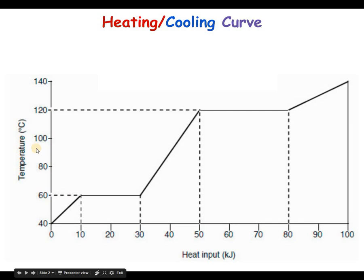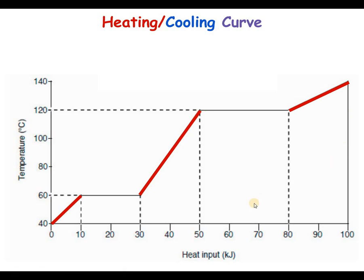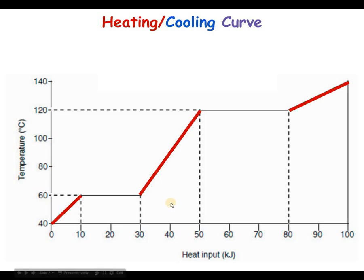On this heating and cooling curve graph, the y-axis represents temperature in degrees Celsius and the x-axis represents the amount of heat energy put into a substance. As we increase the amount of energy, we also see an increase in temperature. Temperature is defined as the measurement of average kinetic energy in a substance, so as we put energy in, we expect to see an increase in kinetic energy.